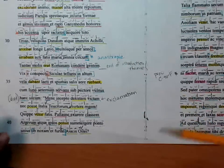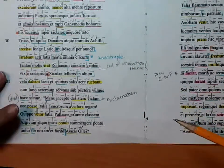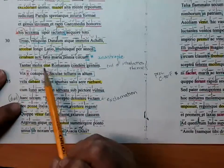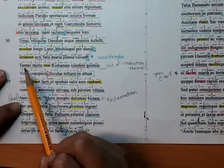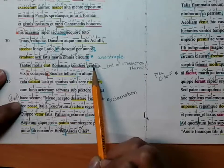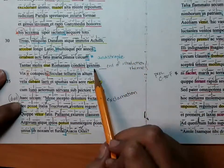This is the Aeneid book one. I'm actually picking up at line 33. Was it of such a great burden to establish the Roman tribe, race?